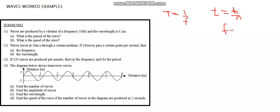Frequency is also equal to 1 over period. So in this case, we are finding period. Period is equal to 1 over frequency. Our frequency has been given as 10 hertz. So, period is equal to 1 over 10 hertz, which gives us 0.1 seconds. That's the period.